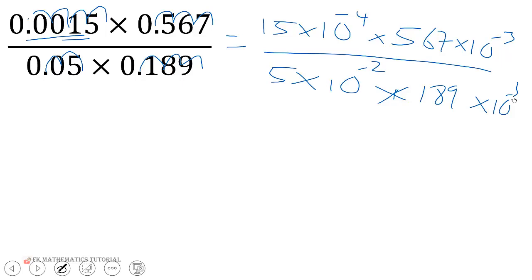So what do we do next? Straightforward. You can see that certain values will cancel certain values. The 10 to the negative 3 will cancel 10 to the negative 3. So what do we have next?